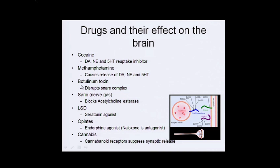Some toxins disrupt the SNARE complex — the SNARE was allowing the vesicles to bind to the membrane and be released, so now you can't release the neurotransmitter at all. Or LSD is a serotonin agonist, so it's activating those same spots. Where the serotonin would be working, you're adding other chemicals that activate the same pathways without an action potential being there.